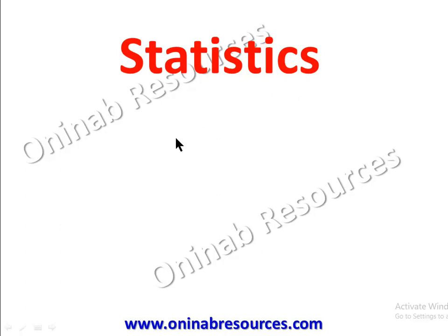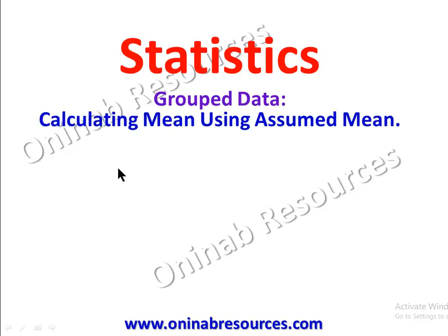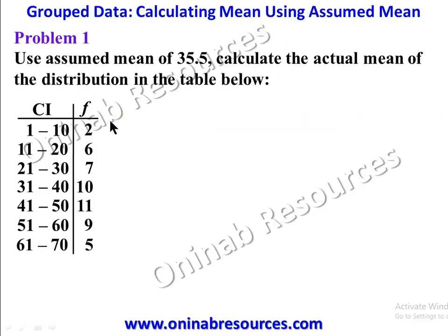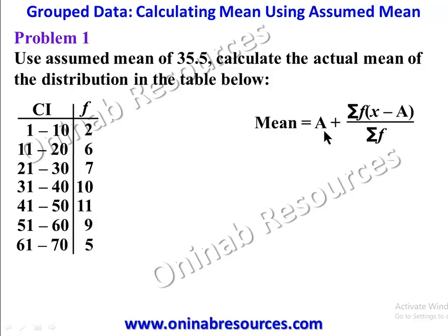Hello and welcome to this tutorial on statistics. In this video we'll be looking at grouped data where we'll be calculating the mean using the assumed mean or working mean. The formula for calculating mean using assumed mean is: A plus summation of f(x minus a) divided by summation of f, where A is the assumed mean.